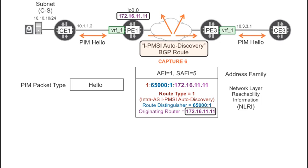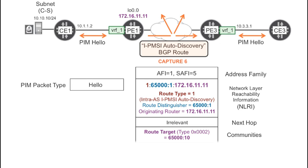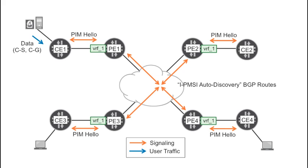With this route, PE-1 is telling the world that it's a multicast-capable router within this VPN. Due to the export policy chosen in this lab, the route target is the same one used for unicast routes, so you have a full mesh topology and all the PEs are MVPN neighbors of each other.